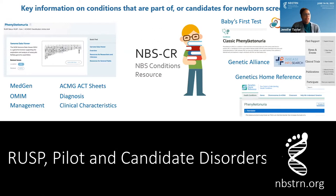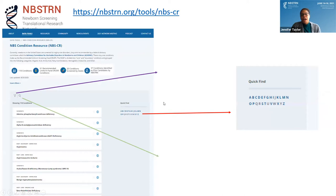Now I'm going to walk you through how to use this resource. You can click on our website and walk through it with me. The URL is nbstrn.org/tools/nbs-cr. Once you go to the website, you'll see a page — you can also go to the data tools and select NBS-CR — and you'll see a list of conditions.